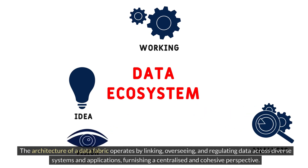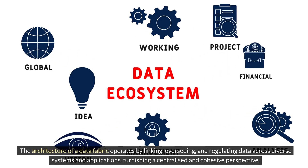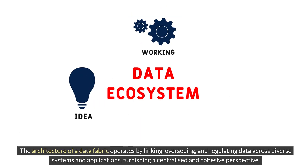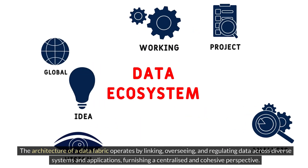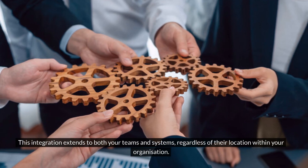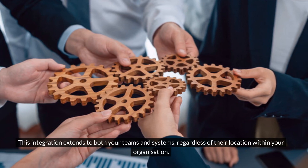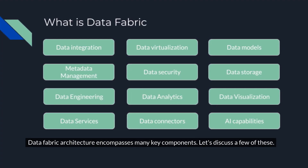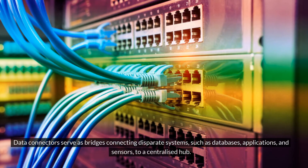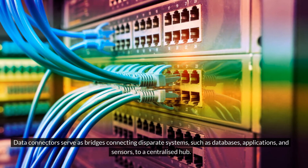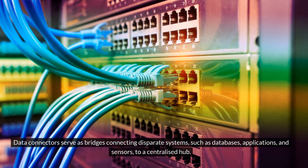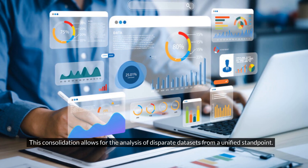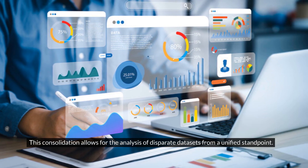The architecture of a data fabric operates by linking, overseeing, and regulating data across diverse systems and applications, furnishing a centralized and cohesive perspective. This integration extends to both your teams and systems, regardless of their location within your organization. Data fabric architecture encompasses many key components. Data connectors serve as bridges connecting disparate systems, such as databases, applications, and sensors, to a centralized hub. This consolidation allows for the analysis of disparate data sets from a unified standpoint.